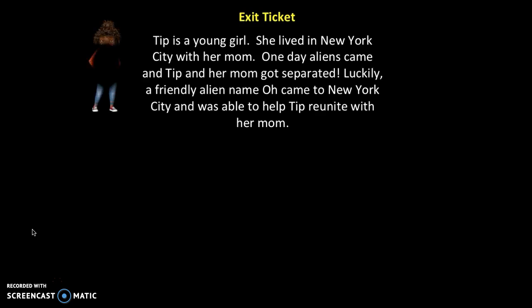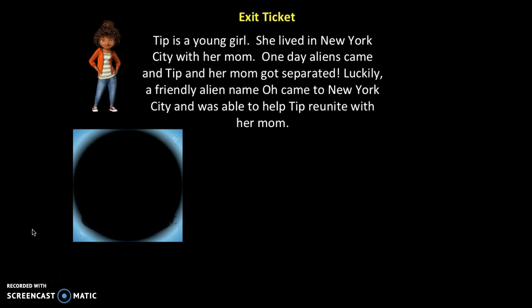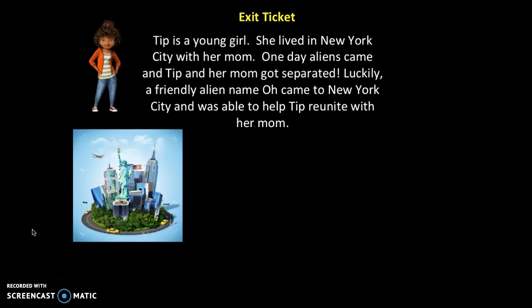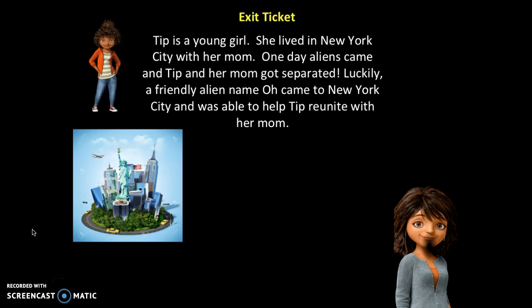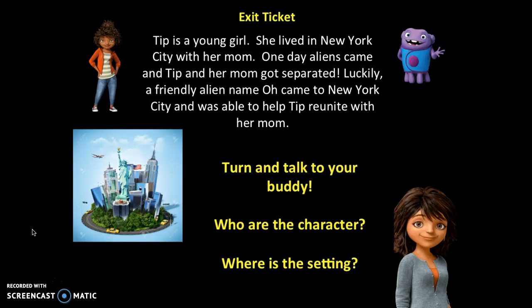Tip is a young girl. She lives in New York City with her mom. One day, aliens came and Tip and her mom got separated. Luckily, a friendly alien named Oh came to New York City and was able to help Tip reunite with her mom. All right boys and girls, turn and talk with your buddy. Your exit ticket is to tell your buddy: who are the characters, and where is the setting?